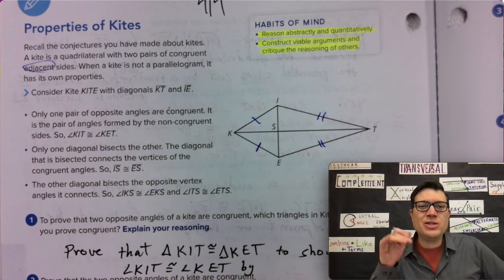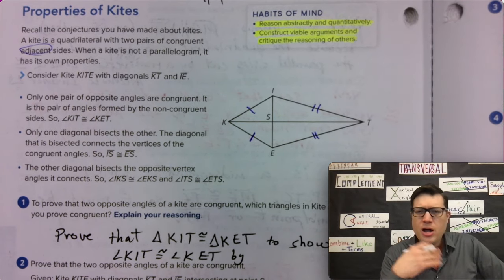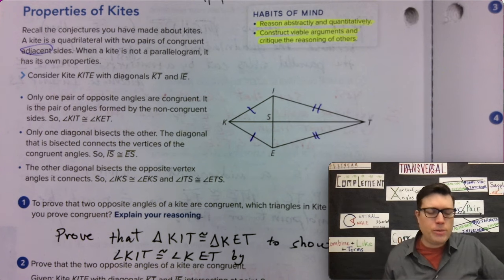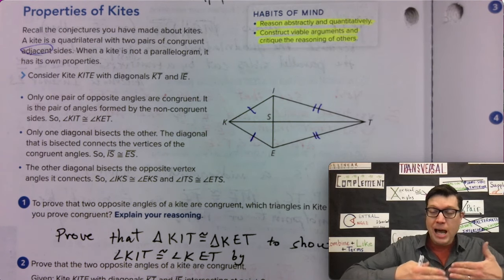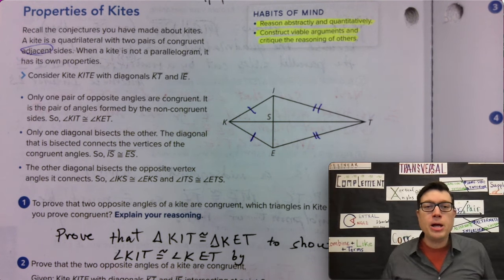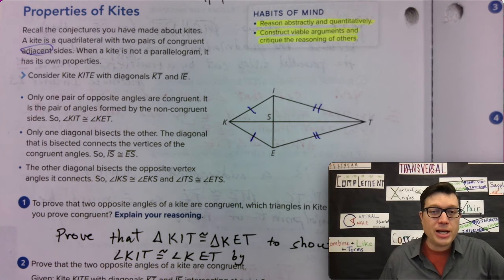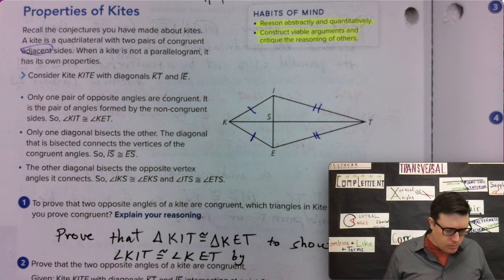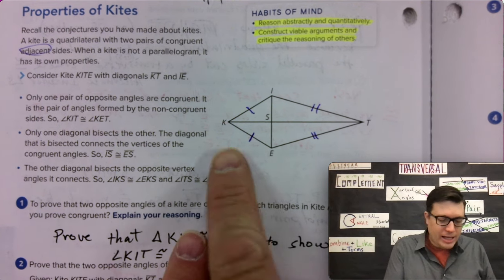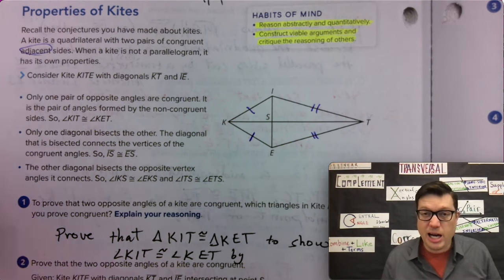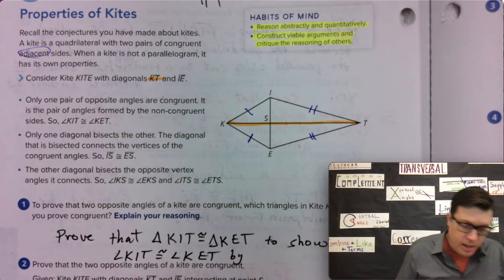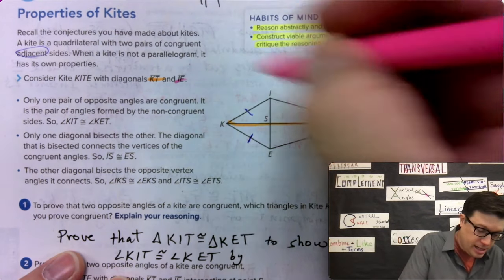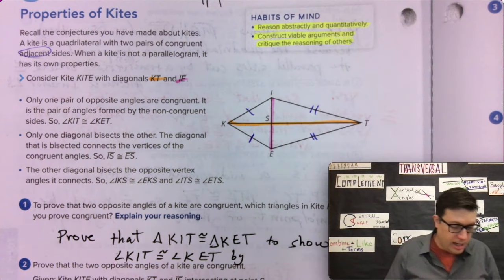When a kite is not a parallelogram, it has its own properties. So, this curriculum allows us to assume that we're saying kites and parallelograms might have some overlap, but when they don't have overlap, these are things that we get from kites existing. We have this diagonal, KT, which deserves a highlight. So, highlight and highlight here. And IE, which is a different diagonal, and it goes across like that.